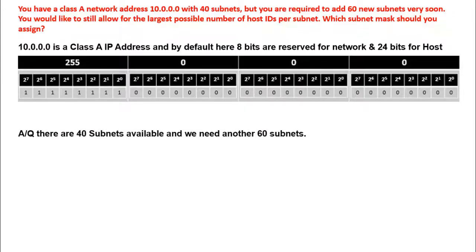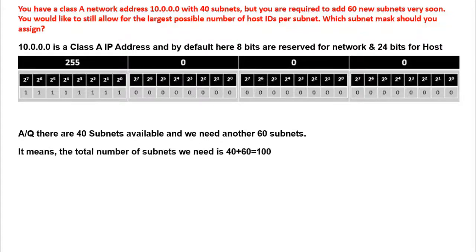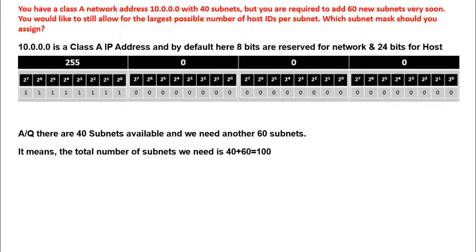According to the question, there are 40 subnets available and we need 60 more subnets, meaning the total requirement is 40 plus 60 which equals 100. The formula for calculating the number of subnets is 2 to the power n, where n equals the number of bits borrowed from the host.